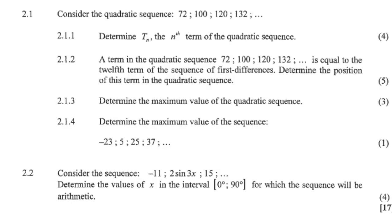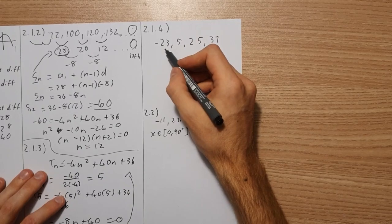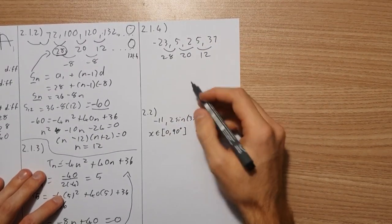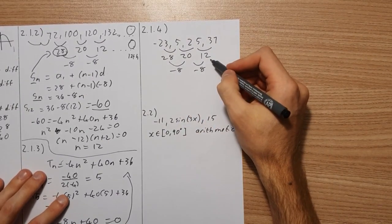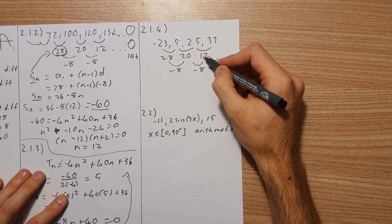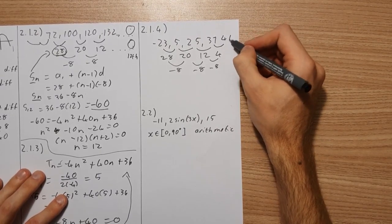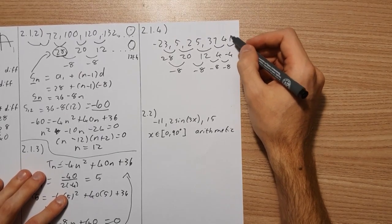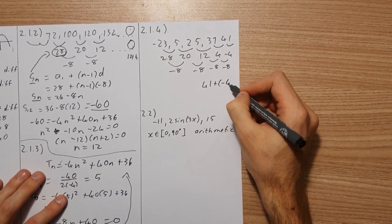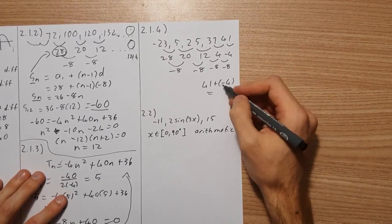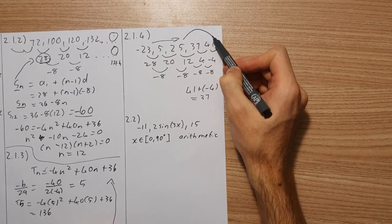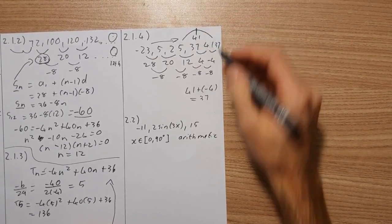Question 2.1.4 says: determine the maximum value of the following sequence. We can see it's a quadratic sequence. Running through it quickly — the differences are 28, then 20, then 12, giving a second common difference of −8. Continuing: 12 − 8 = 4, so the next term is 41 + 4 = 45... wait, 37 + 4 = 41. Then adding −4 gives 37. So we increase to 41 and then start decreasing, meaning the maximum value by inspection is 41.